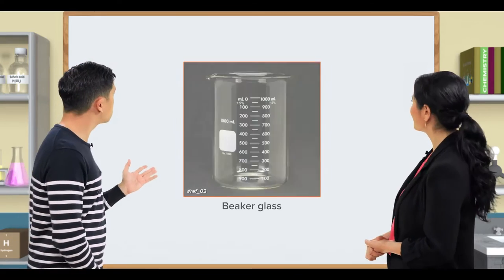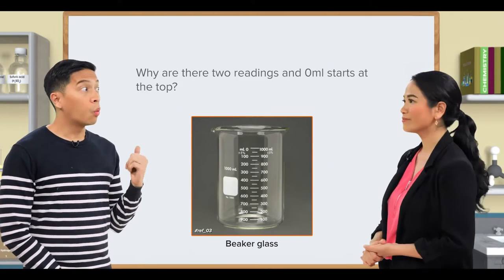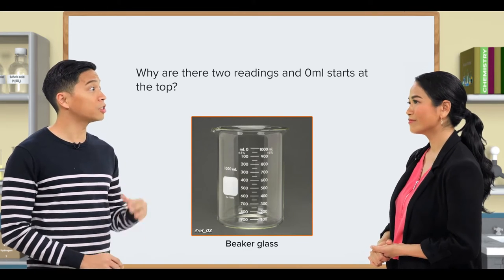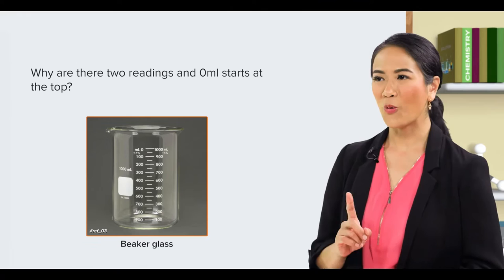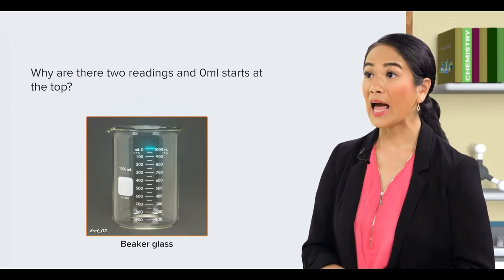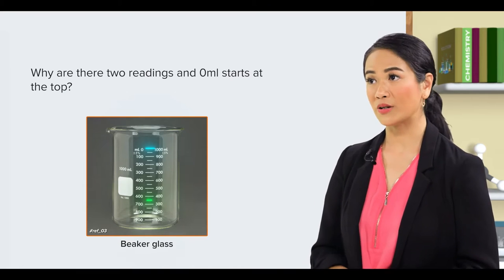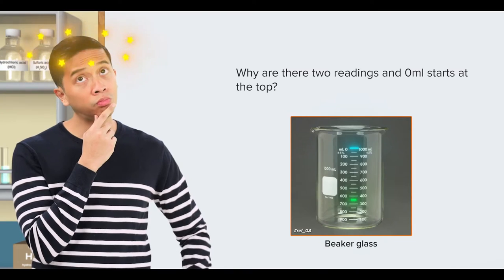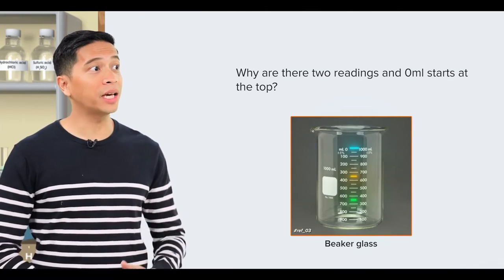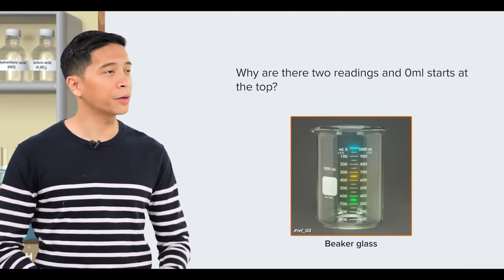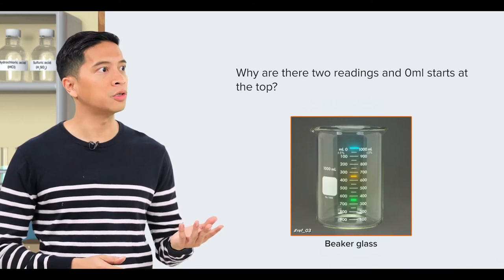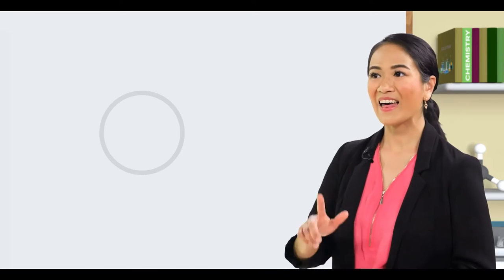What about this? Why are there two readings? And it looks weird to have 0 ml start at the top of the beaker. Well, let's say you have 1,000 ml of water in the beaker, and you want to take out 350 ml. Ah, I see. You can simply read the other scale to the 350 ml mark. No need to calculate 1,000 minus 350 equals to 650 ml. That's right.